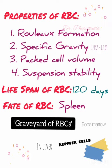The average lifespan of RBCs is about 120 days. After their lifetime, the senile old RBCs are destroyed in the reticuloendothelial system. The lifespan of RBCs is determined by the radioisotope method, which will be explained further in subsequent videos.